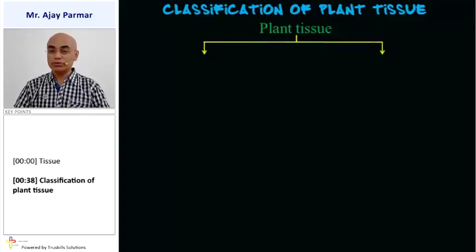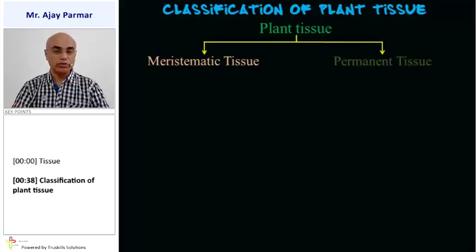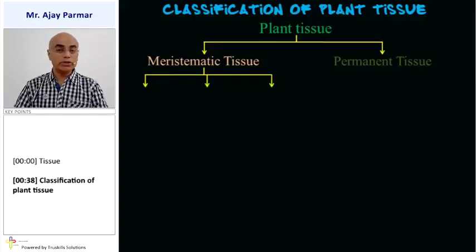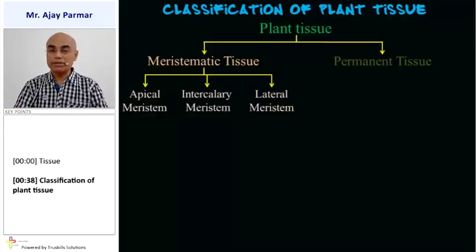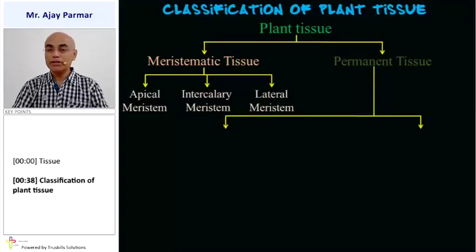Basically, we classify plant tissues into two categories. Number one is meristematic tissue, also called temporary tissue. And number two is permanent tissue. Meristematic tissue is further classified into three categories: apical meristem, intercalary meristem, and lateral meristem. We shall discuss each of these meristems, their structure and function, a little bit later on.